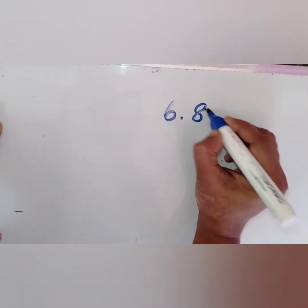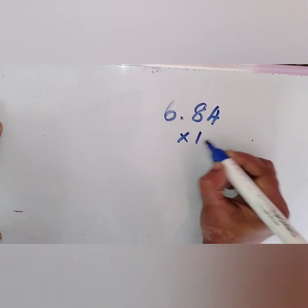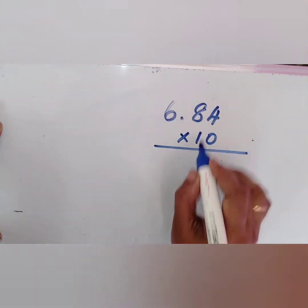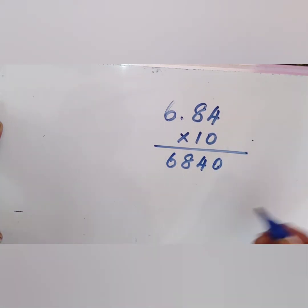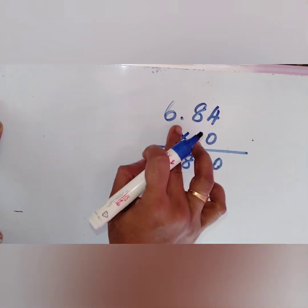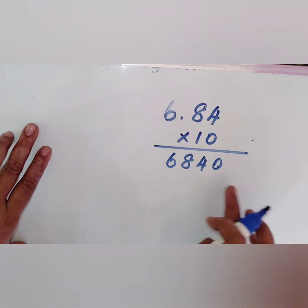6.84 into 10. As we know, when we multiply numbers with 10, we write those numbers as it is and add a zero to its right. The same way I have done it here.